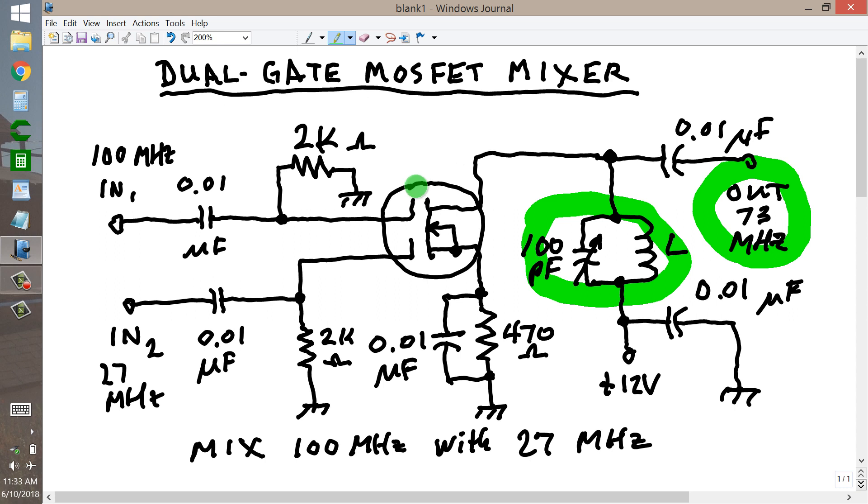This component, the dual gate MOSFET, once again, gate number 1, gate number 2, the source, the drain.